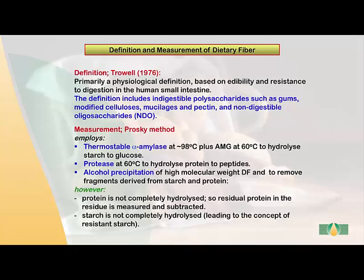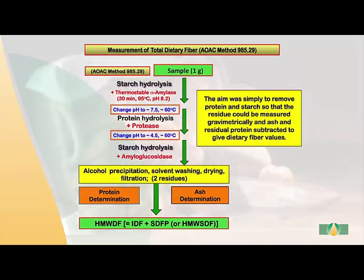The method developed to measure dietary fiber according to Trowell's definition was the Prosky method, in which thermostable alpha-amylase and amyloglucosidase were used to hydrolyze the starch to glucose, protease to hydrolyze the protein to peptides, and then alcohol precipitation to remove low molecular weight hydrolyzed material from the high molecular weight fiber. This was recovered, dried, and weighed. However, protein is not completely hydrolyzed in this method, so residual protein is measured and subtracted, as is ash. Also, for some samples, starch is not completely hydrolyzed, leading to the concept of resistant starch.